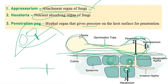It starts to absorb the nutrients. Whatever nutrients the plant is producing for itself — because the plant is chlorophyllous and can produce its own food material — through the specialized structure called haustoria, the fungus starts to absorb those nutrients.